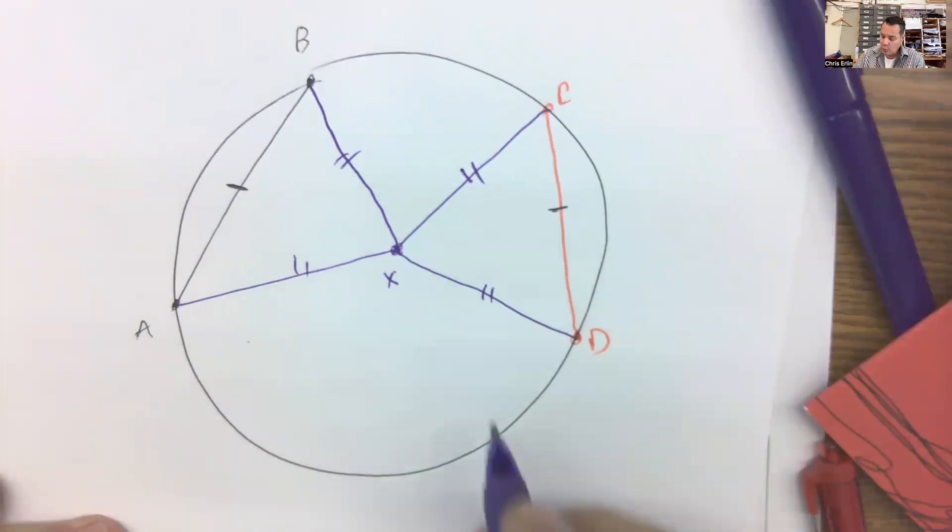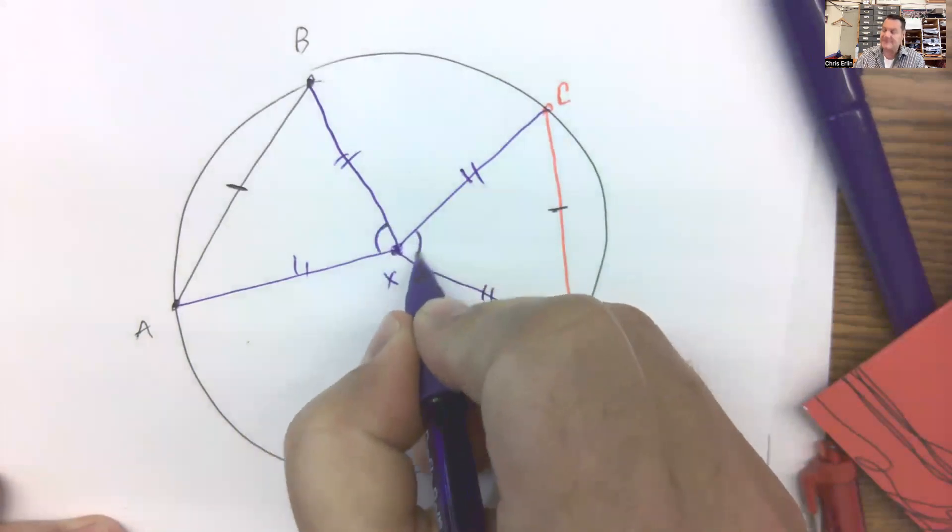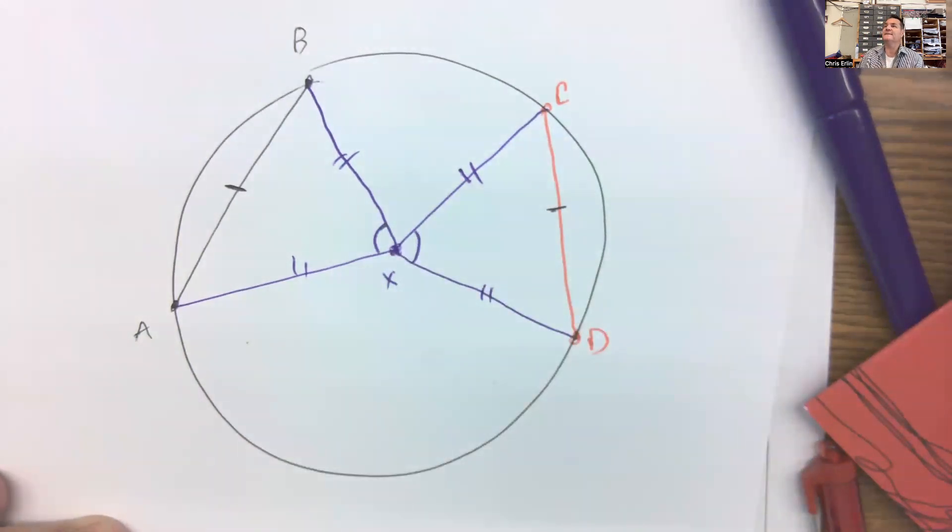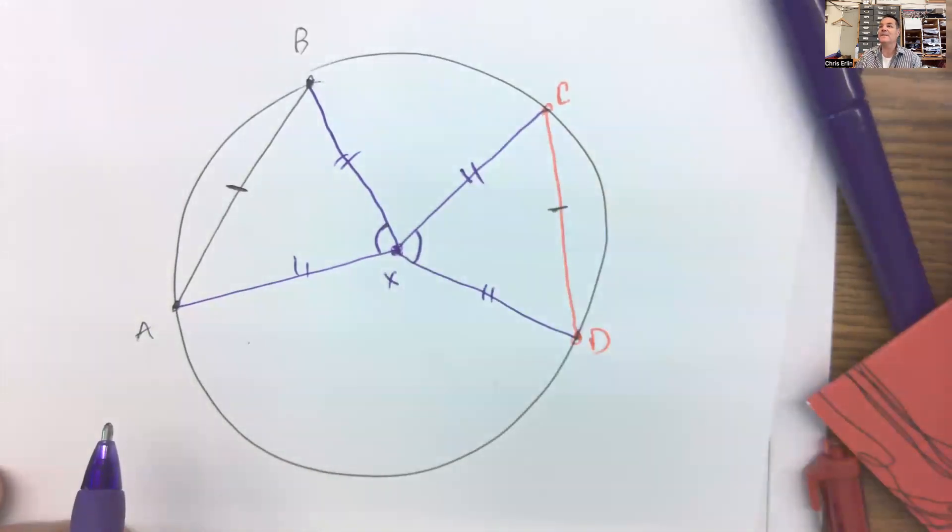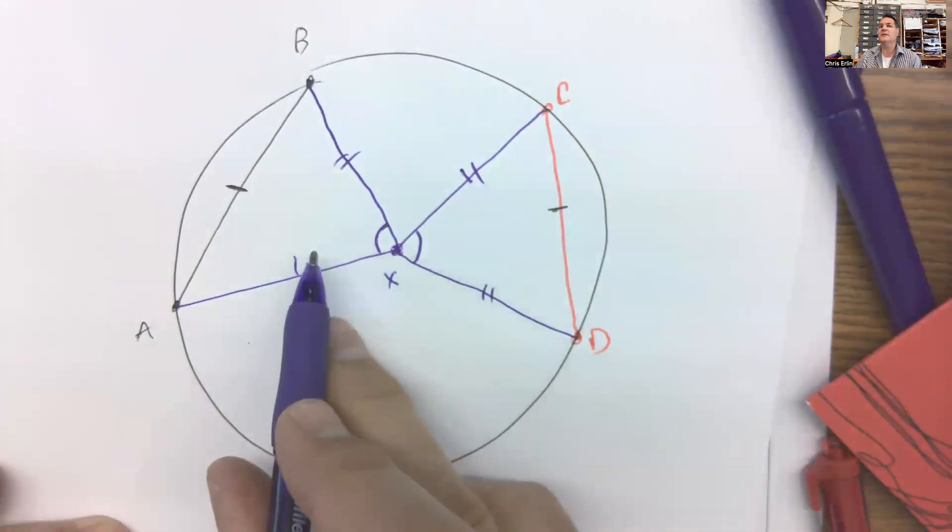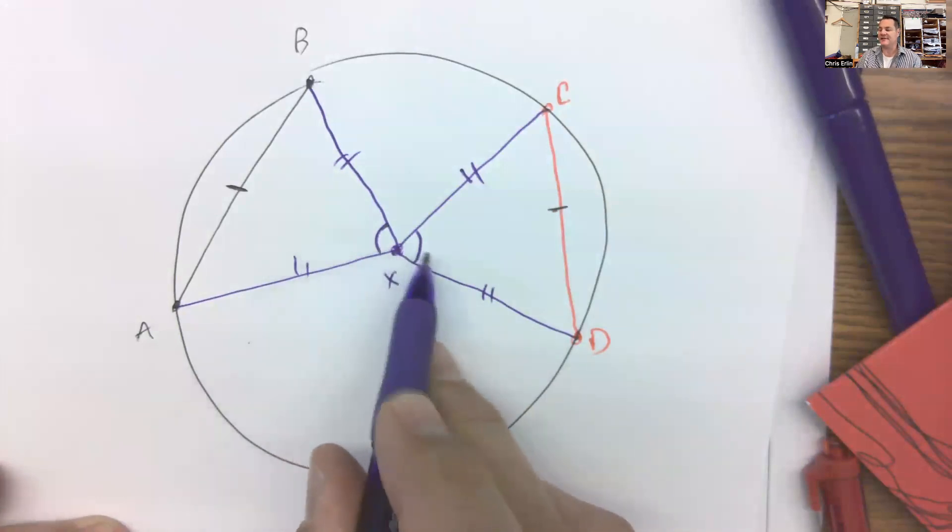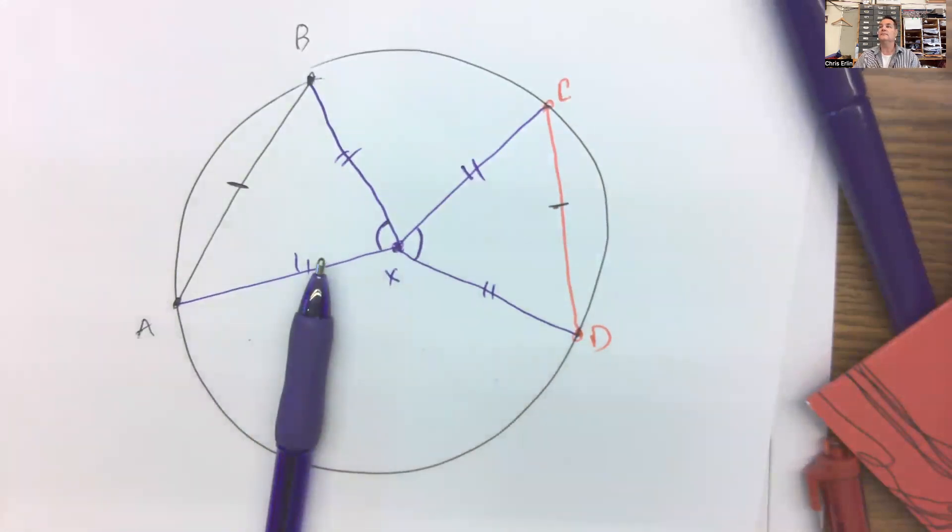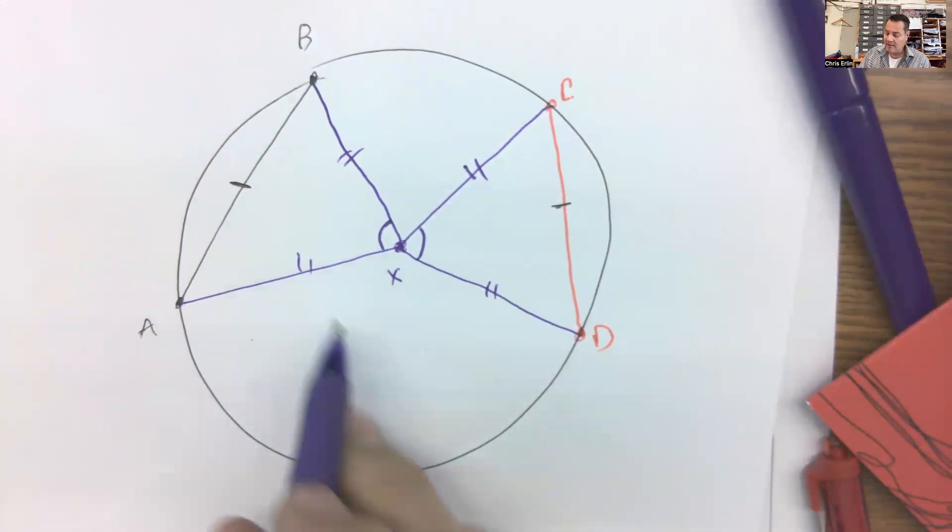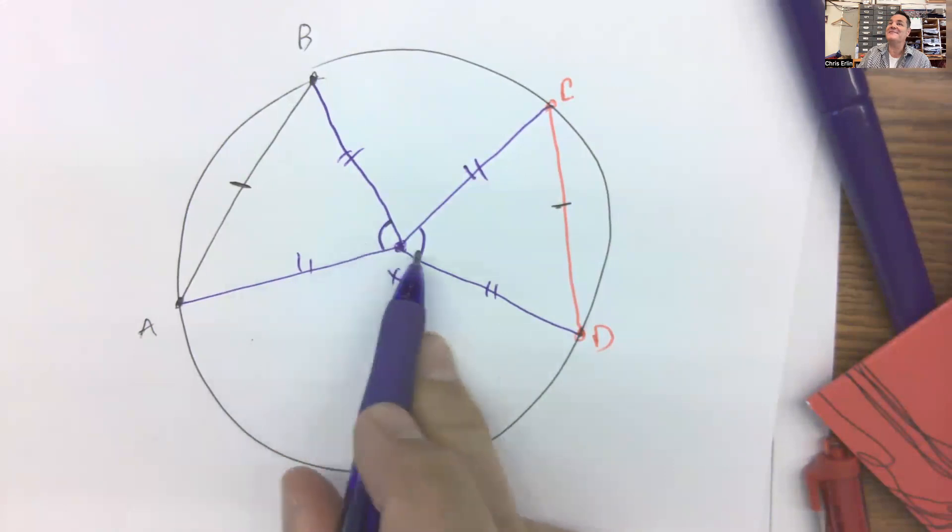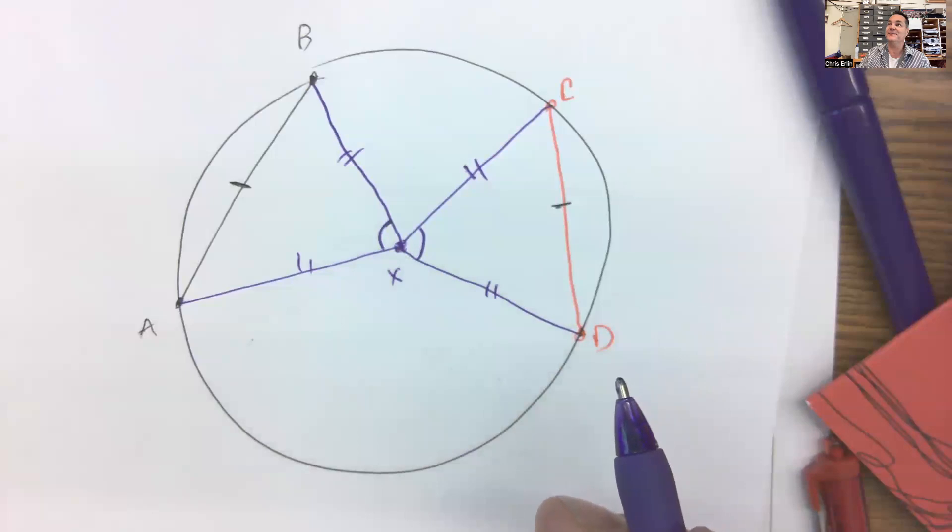And then because they're congruent, what can we say about these angles? Not quite. Not quite, because these lines aren't continuous. Are these two triangles congruent? Are these corresponding parts in congruent triangles? CPCTC, right? Good. And if they're congruent by CPCTC. If, in fact, these are corresponding angles in two congruent triangles, then won't they be congruent too by CPCTC?